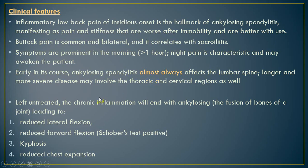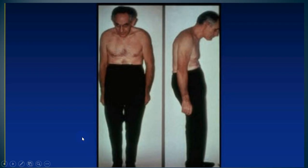When the thoracic spine is involved there will be kyphosis, and there will also be reduced chest expansion. The typical stooped posture of advanced ankylosing spondylitis is caused by a combination of flexion deformity of the neck, thoracic kyphosis, loss of lumbar lordosis, and flexion deformities of the hip.